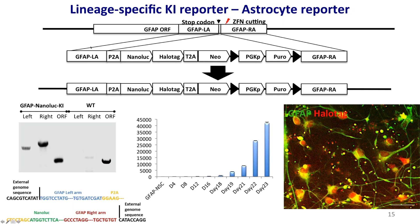Similarly, we made a reporter targeting the GFAP endogenous gene, with full genotyping and functional validation. You can see the astrocytes show much higher luciferase activity because the endogenous GFAP promoter is very strong. We confirmed co-localization of GFAP and HaloTag. We also have a neural stem cell reporter and an oligodendrocyte reporter in MVP, which I haven't shown data for here, but the lines are available.